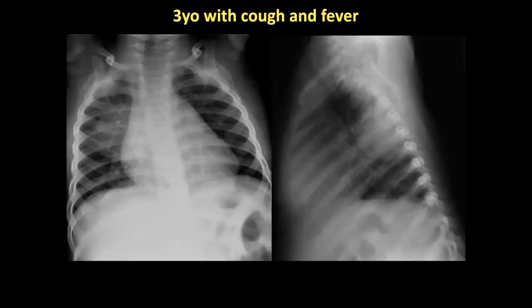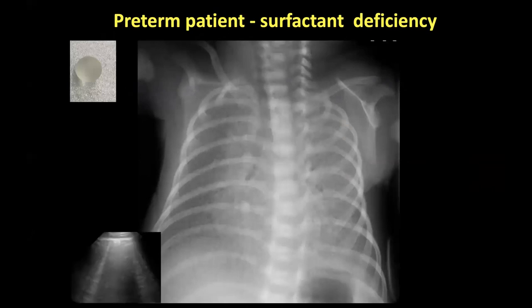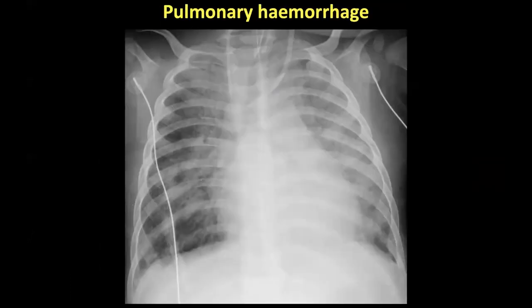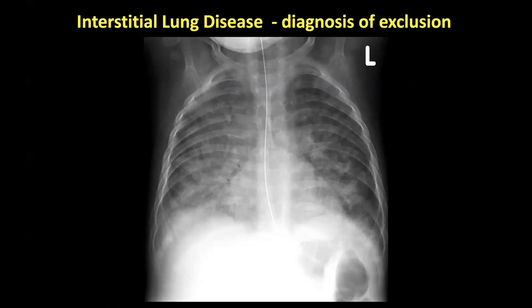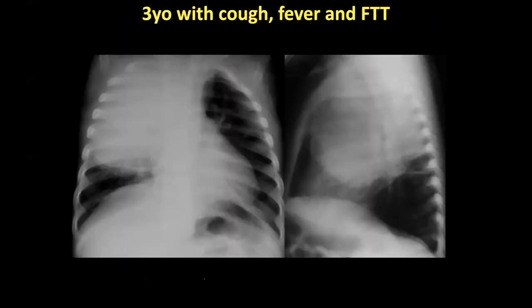Bilateral pattern bronchopneumonia is a clinical diagnosis. Round pneumonia — you're all aware of that. And just quickly: ground glass is an interstitial pattern. On ultrasound, you can see nothing through it. Its differential is wide: viral or atypical pneumonias, hemorrhage, edema — all in the differential.